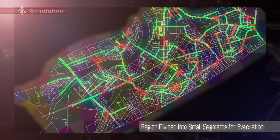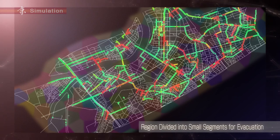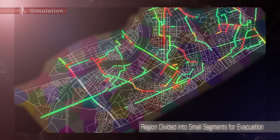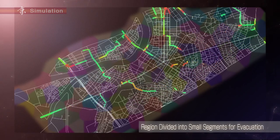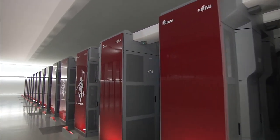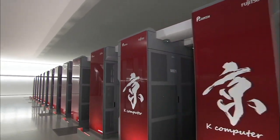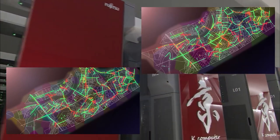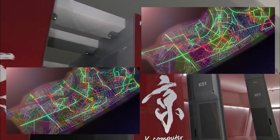On the other hand, when the region was divided into neighborhood-sized segments and the residents were given detailed instructions for evacuation, they can move smoothly to the designated shelter. Quickly, the dots representing people disappear. Performing simulations using the K computer with various parameters for segment size and evacuation instructions, unexpected results were achieved.